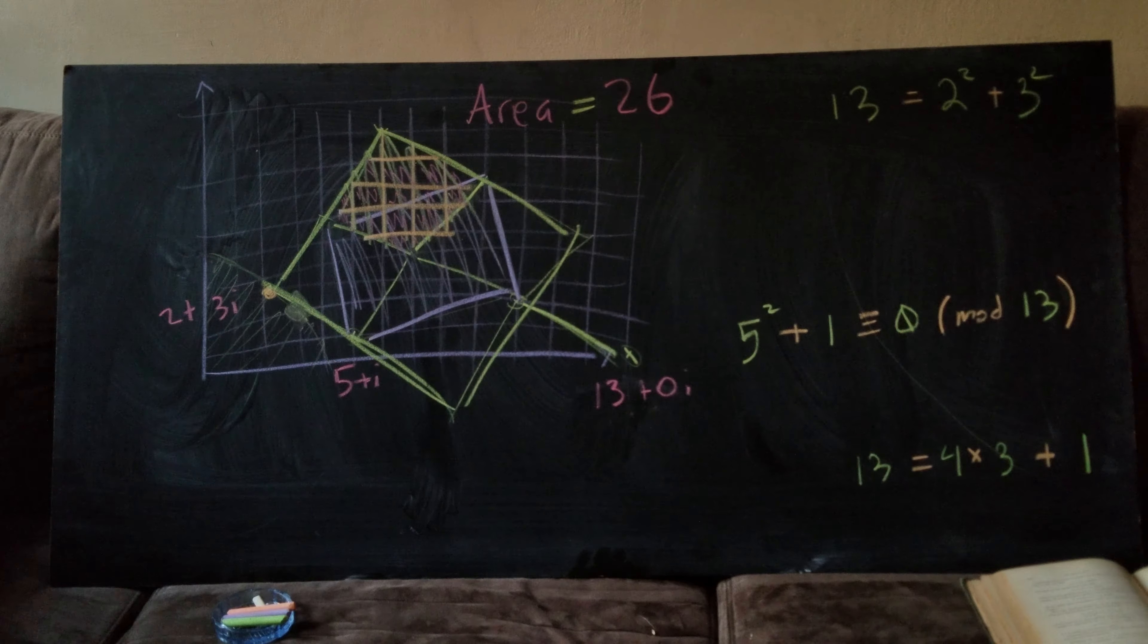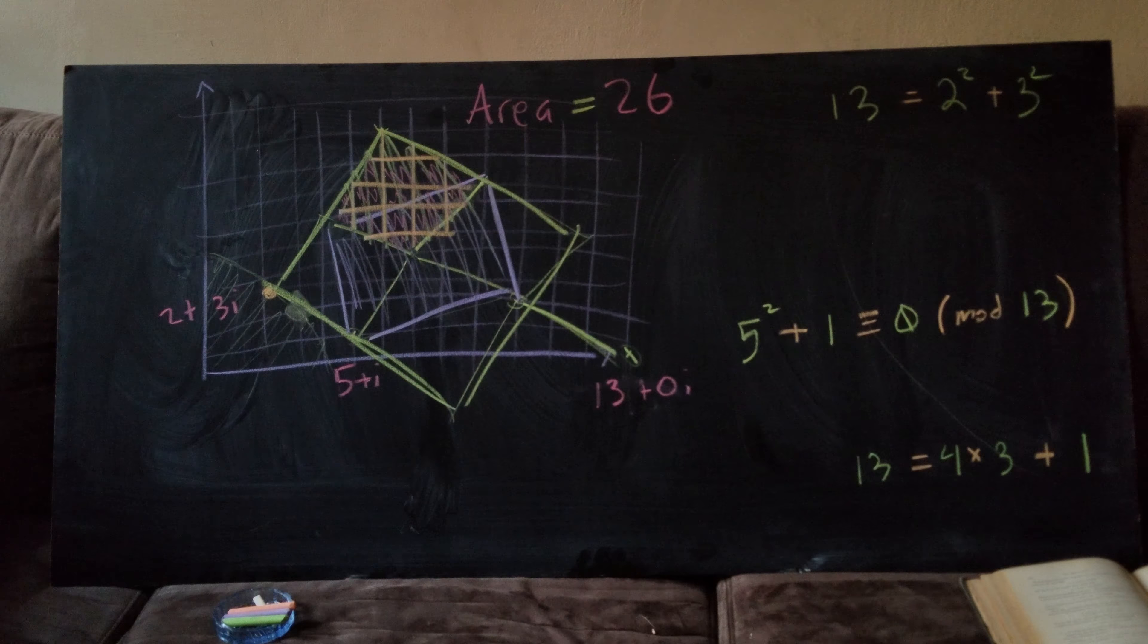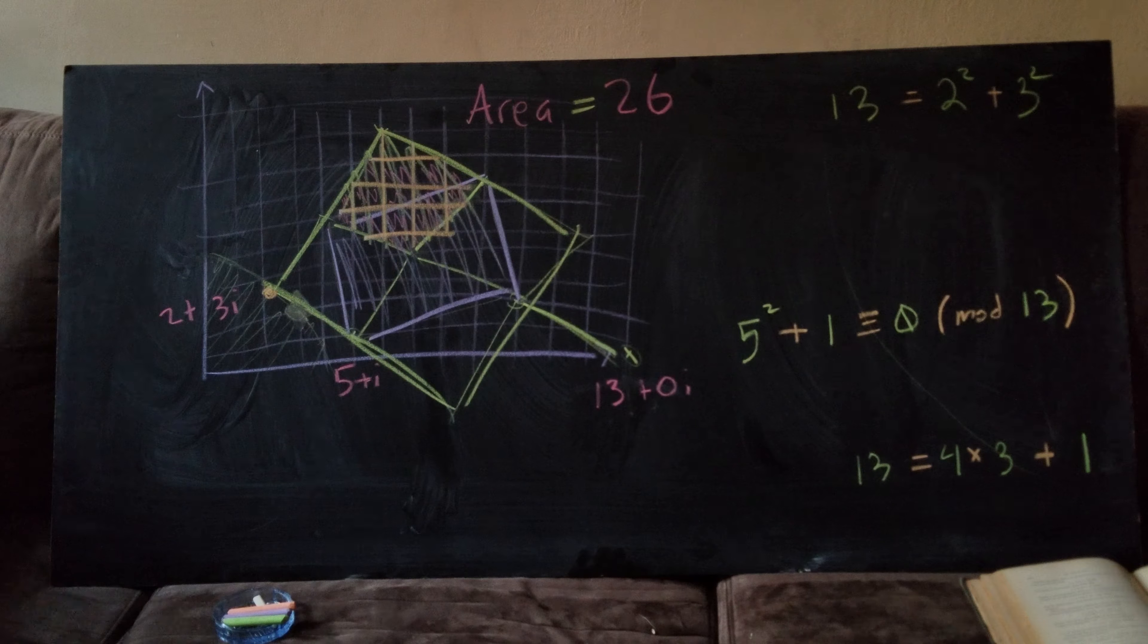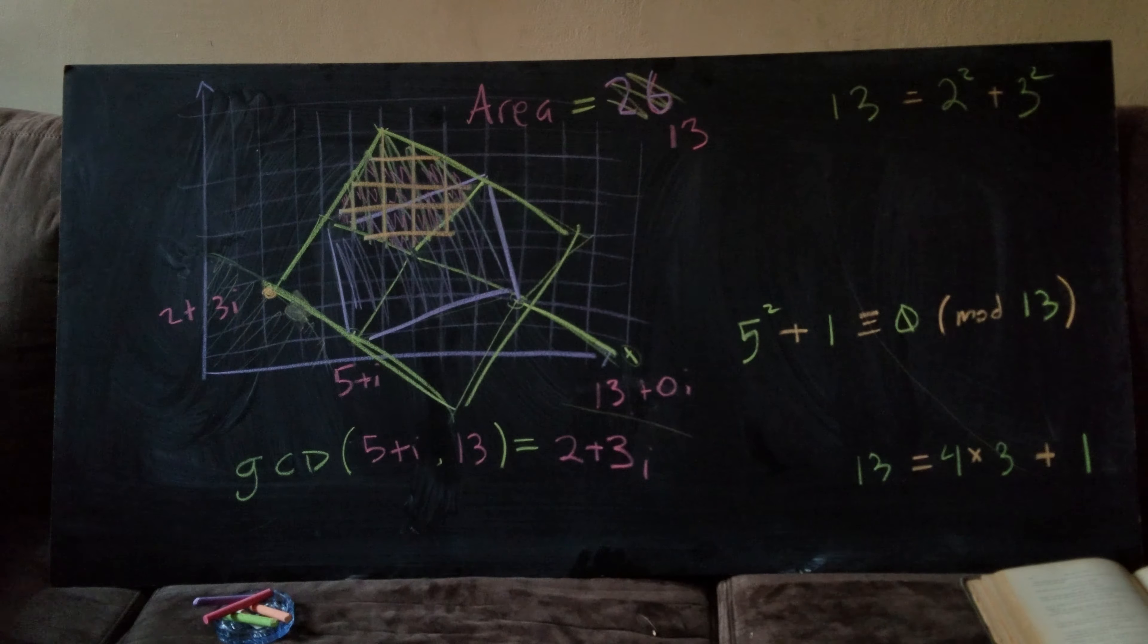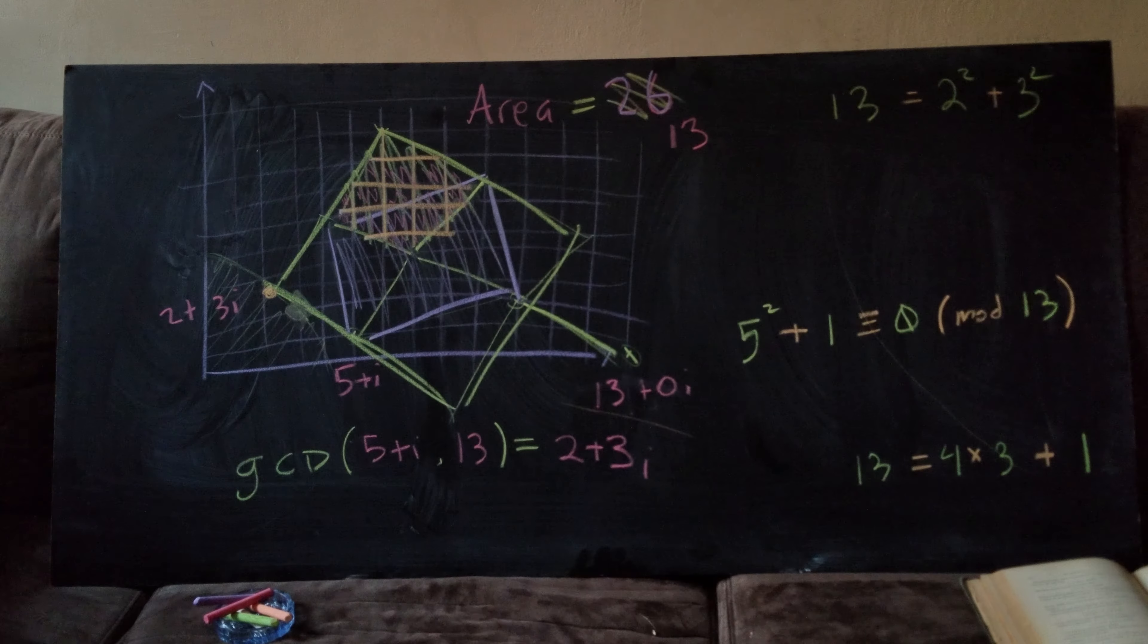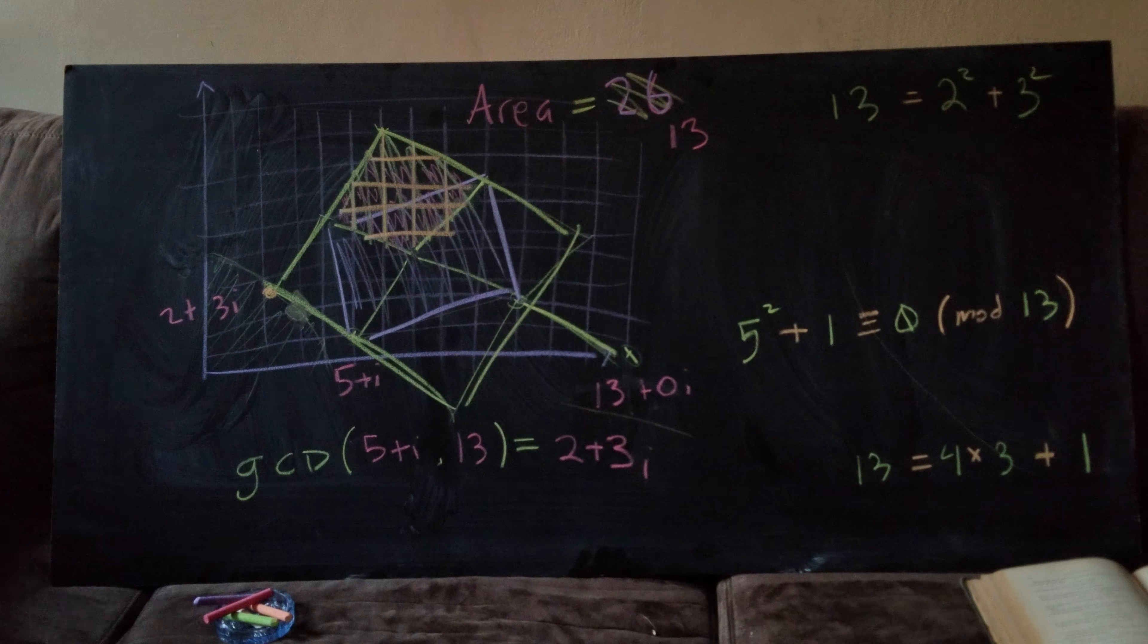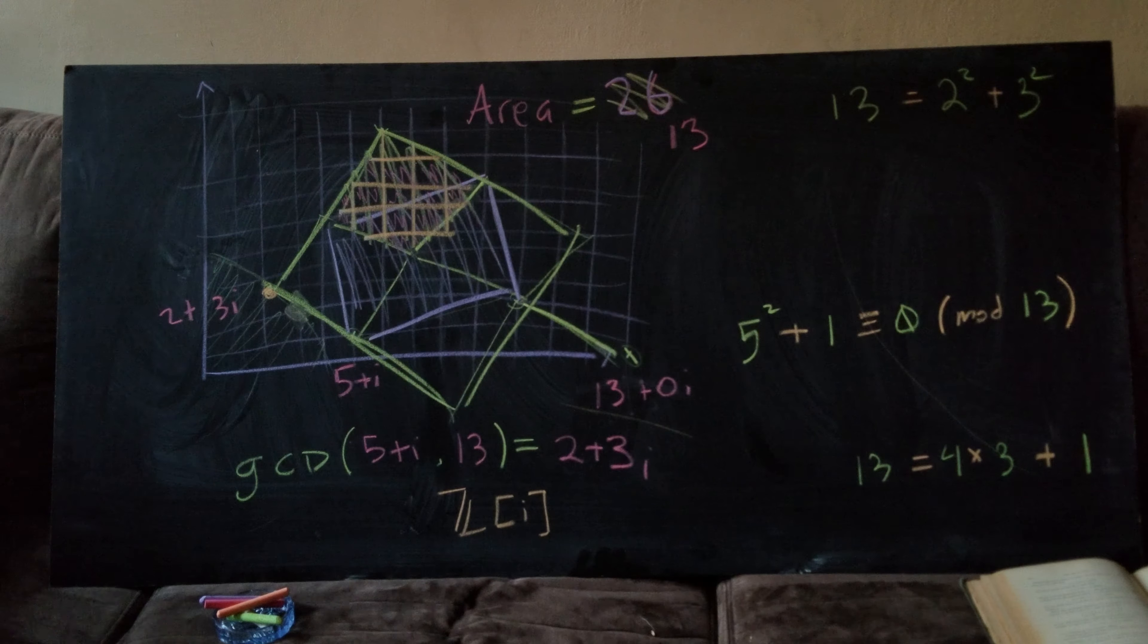So that'd be a nice challenge to find a lattice square of area 26. Well, 26, no this is actually better. So we've improved our size 26 square to a size 13 square and we have solved a Gaussian numbers GCD problem. GCD of 5 plus i and 13 is 2 plus 3i. So this is our problem in the realm of Z adjoin i.